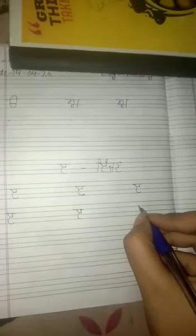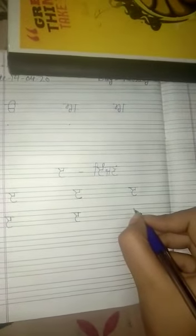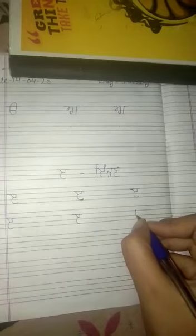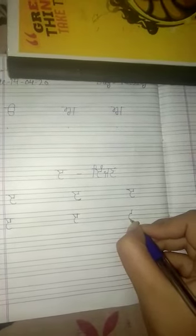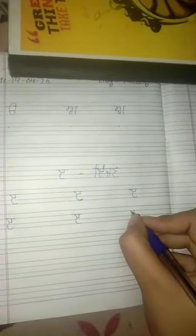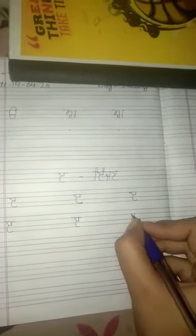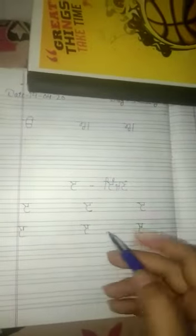Small standing line, semicircle, small slanting line, and then make sleeping line. Small standing line, semicircle, small slanting line, and then sleeping line.